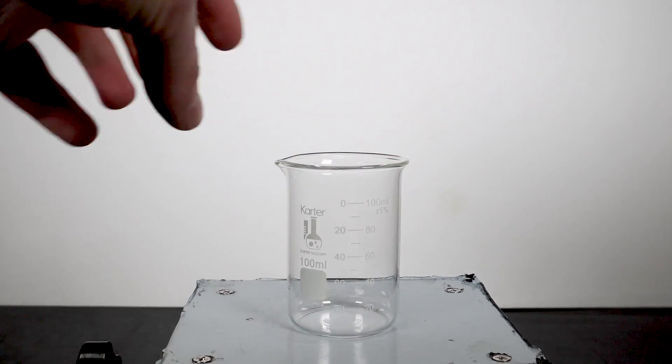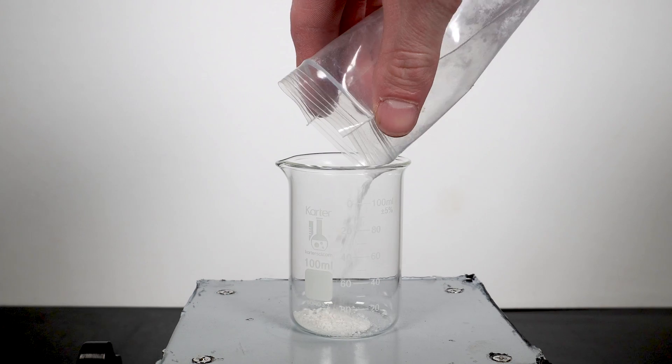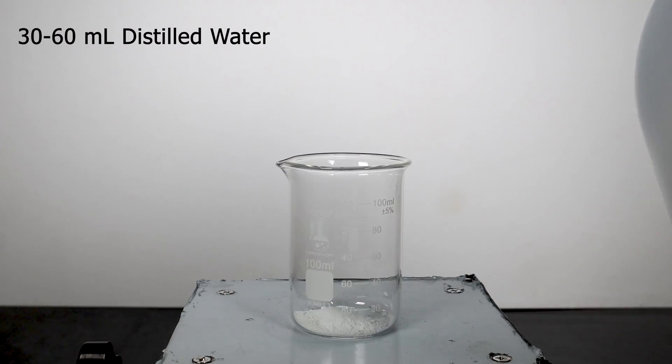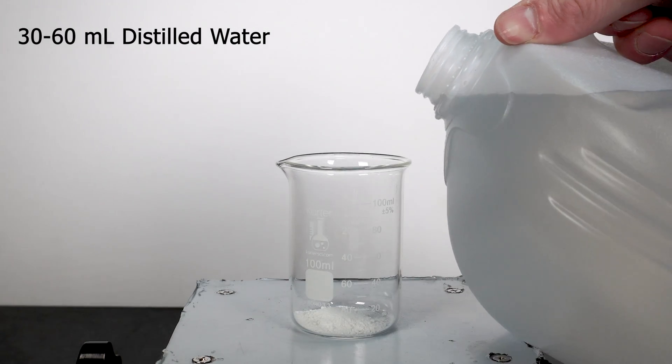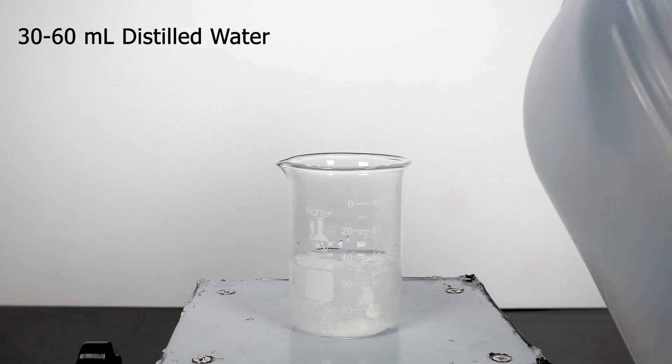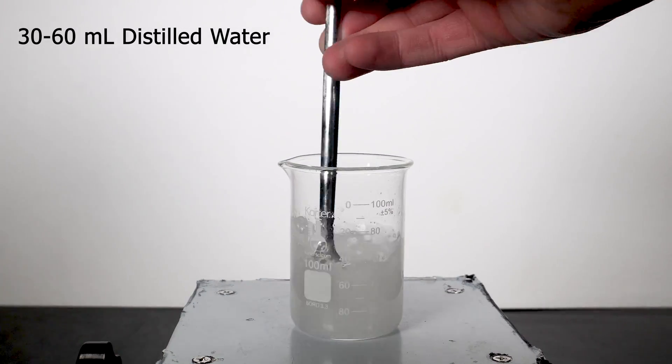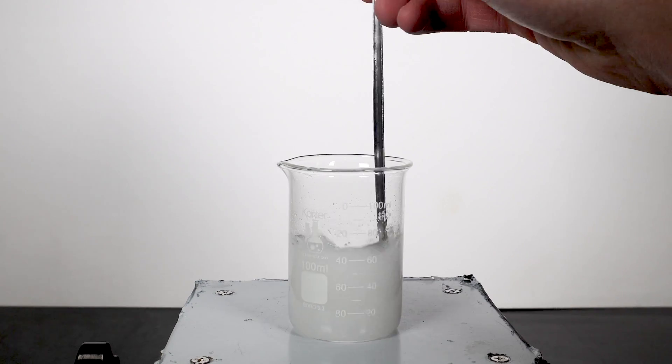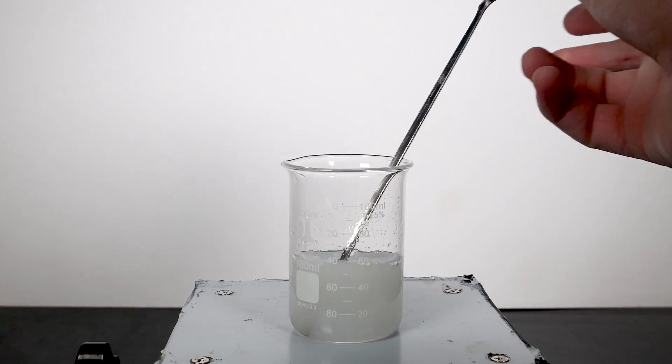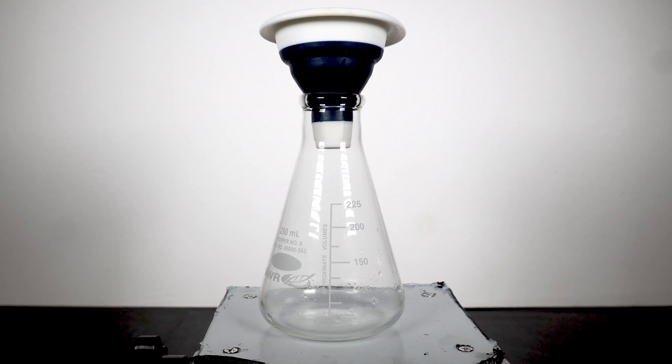Next, we will need to pour all of the powder into a beaker, and top it off with anywhere between 30 and 60ml of distilled water. From here, we just need to mix everything. Vitamin C is pretty soluble in water, but a lot of the pill filler will be left behind. Once everything is mixed for about a minute, we can move on to filtering.